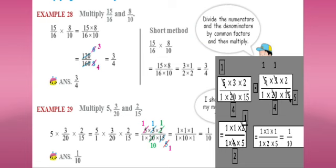The other method is to divide the numerator and denominator by common factors before multiplying. Here 8 and 16 share a common factor of 8: 8 divided by 8 is 1, and 16 divided by 8 is 2. Strike out 8 and write 1; strike out 16 and write 2. For 15 and 10, the common factor is 5: 5 goes 3 times in 15 and 2 times in 10. Strike out 15 and write 3; strike out 10 and write 2. The answer is 3 into 1 by 2 into 2, which is 3 by 4.